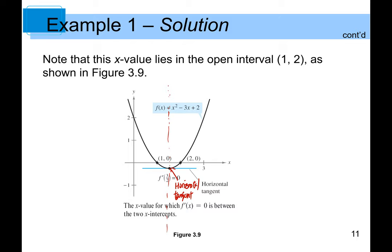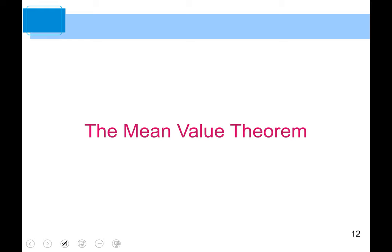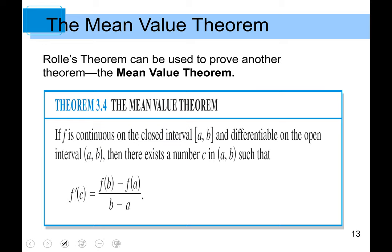Next, let's take a look at the Mean Value Theorem, abbreviated as MVT. Rolle's Theorem can be used to prove the Mean Value Theorem. If f(x) is continuous on the closed interval [a, b] and differentiable on the open interval (a, b), then there exists a number c in (a, b) such that f prime of c equals [f(b) - f(a)] / (b - a).